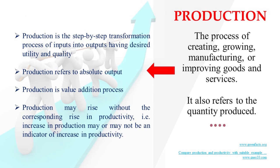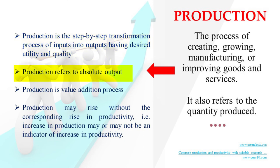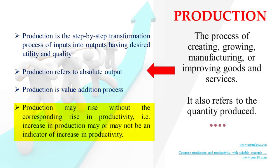Differentiating between production and productivity. Production is the process of creating, growing, manufacturing, or improving goods and services. It also refers to the quantity produced. Production is the step-by-step transformation process of inputs into outputs having desired utility and quality. Production refers to absolute output and is a value-addition process. Production may rise without a corresponding rise in productivity — that is, an increase in production may or may not be an indicator of an increase in productivity.